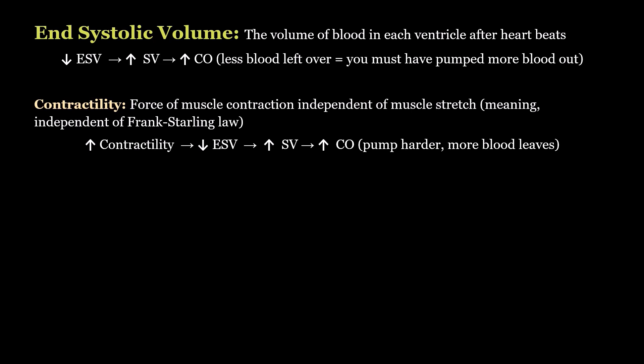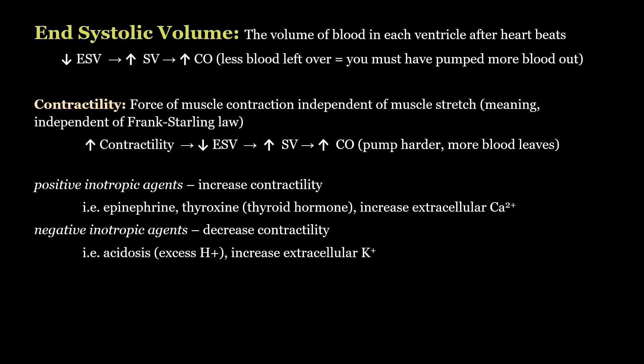Things that increase contractility are called positive inotropic agents, and negative inotropic agents decrease contractility. The negative inotropic agents — such as acidosis and elevated extracellular potassium — are pathological things, not part of your normal homeostatic mechanisms. This would be part of a disease process decreasing contractility, not something your body would be doing intentionally. There are also certain medications that are negative inotropes.